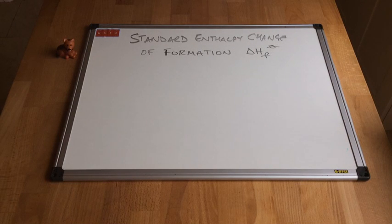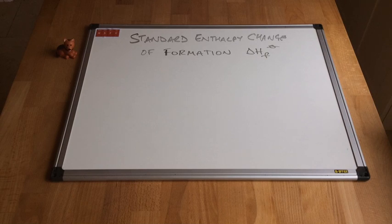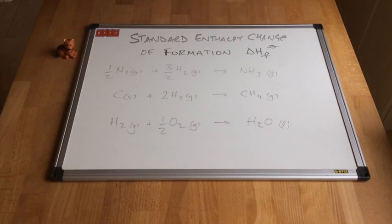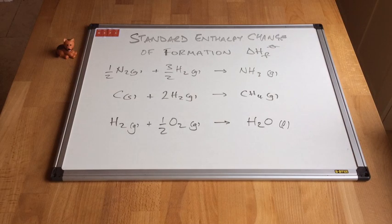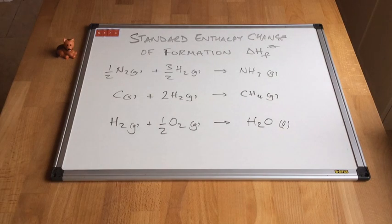The last one is the standard enthalpy change of formation, with the symbol delta H F standard. I'm going to put up some standard enthalpy change of formation equations and see if you can work out the definition from the equations. There are three equations: in the first we have formed ammonia NH₃, in the second we formed methane CH₄, and in the third we formed water.